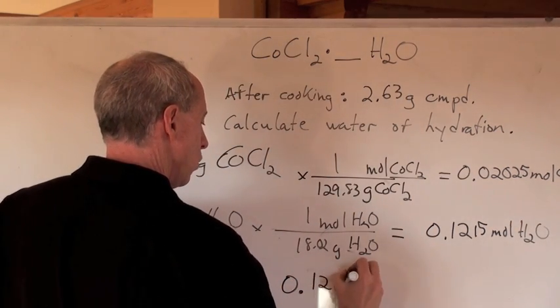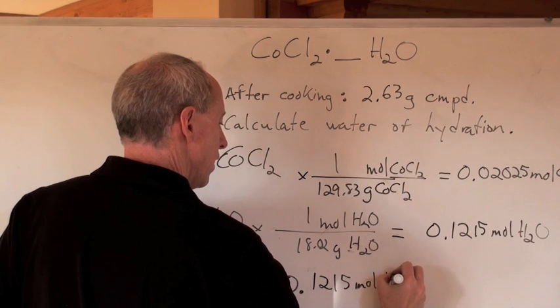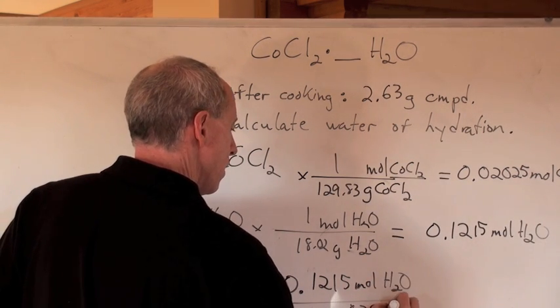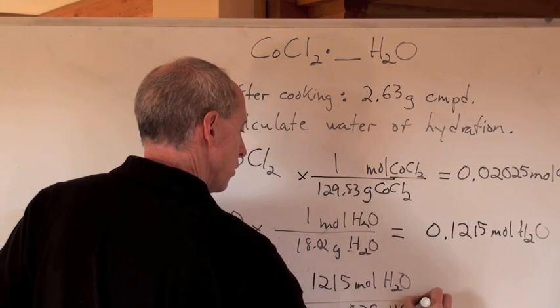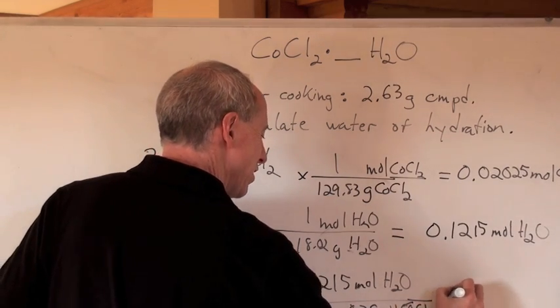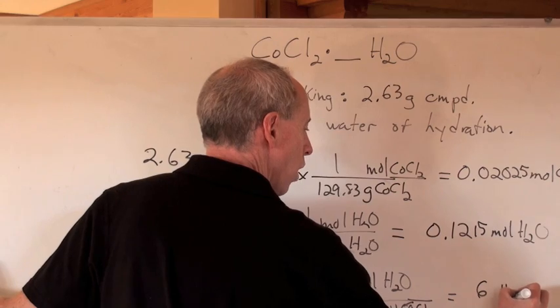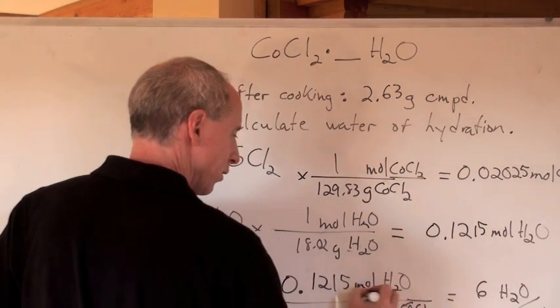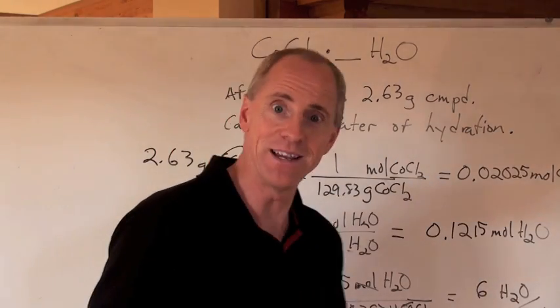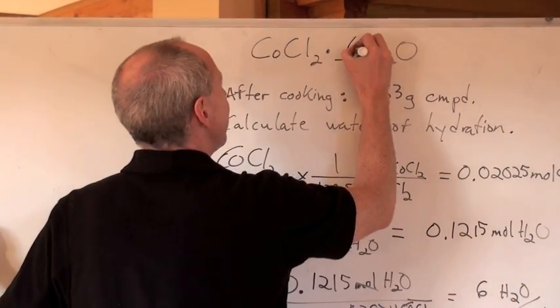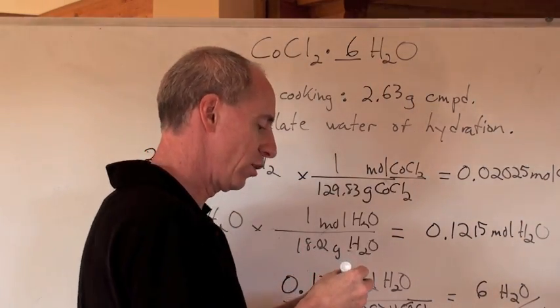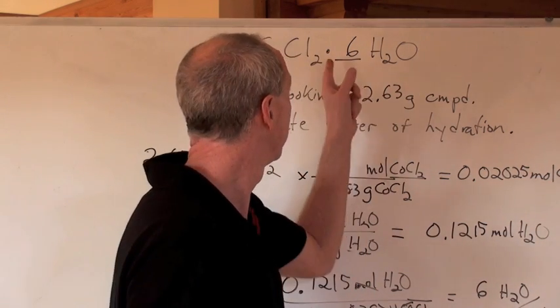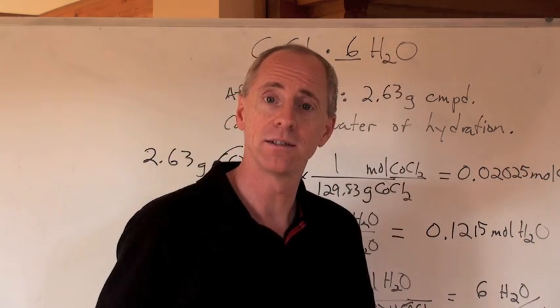When you take 0.1215 moles of H₂O and you divide it by 0.02025 moles of CoCl₂, the ratio of that to that is 6 waters to 1 CoCl₂. That's the ratio that you get here. What does that mean? That means that this is called cobalt 2 chloride, because that's the Co with the 2 positive charge, hexahydrate.